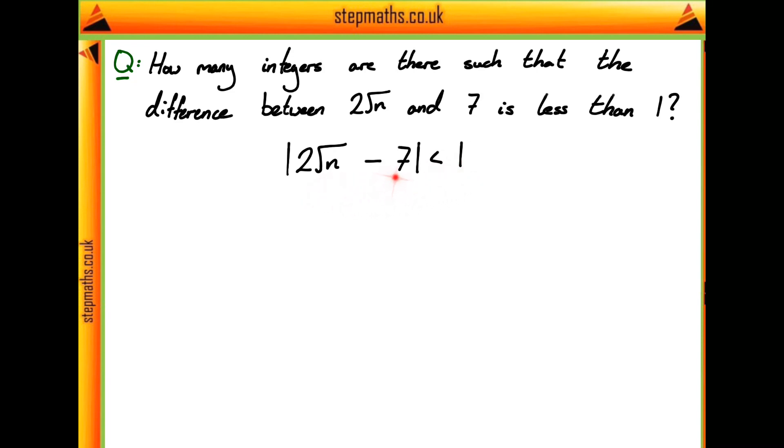Now this might not be an immediately obvious step, saying the magnitude of it, but let's say the difference between 2 root n minus 7 was minus 5 or something. That obviously is going to be less than 1 in the sense that it is more negative than 1. But I think this question implies the magnitude by looking at the answers. While this question isn't necessarily obvious, do try and have a bit of a think about what they probably do mean.